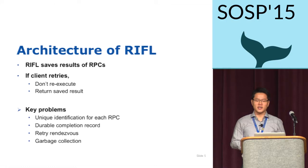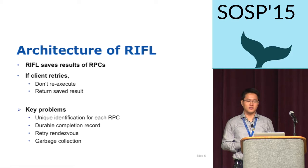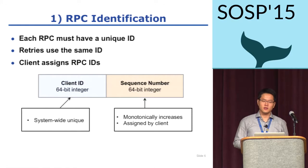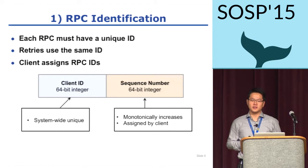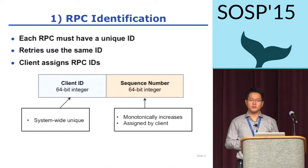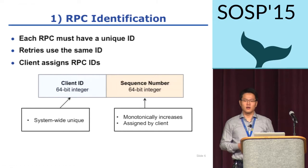Riffle is designed to provide exactly-once semantics by saving results of RPCs and allows systems to handle retries by returning saved results instead of re-executing. I will talk about four key ideas of Riffle architecture. The first key idea is that we need unique identifications for RPCs to detect client retries, so all RPC requests should carry the same ID. For scalability, the assignment of RPC ID happens locally on the client. To make IDs unique within a cluster, the RPC ID is composed of a unique client ID and a monotonically increasing per-client sequence number.